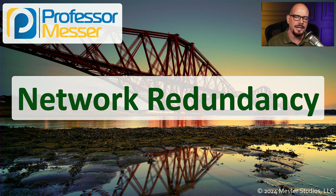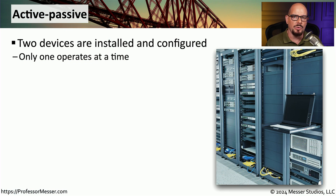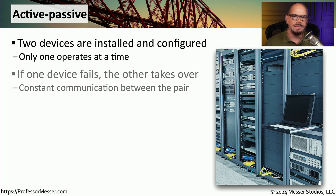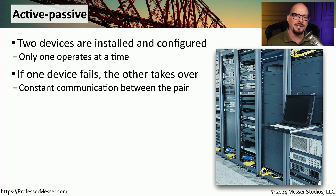Maintaining uptime and availability on the network can be a challenge. In this video, we'll look at different methods for providing network redundancy. One of the most common forms of network redundancy is active-passive. This is where you have two separate pieces of equipment, but only one of them is active or running at any particular time. These two devices are constantly communicating between each other, giving updates on their status. If the primary device fails, the secondary device takes over as the primary device on the network.